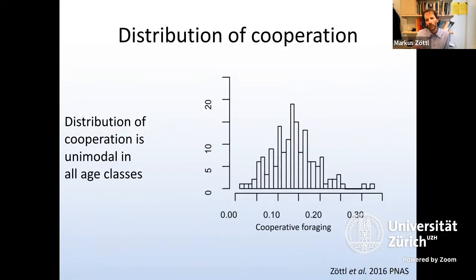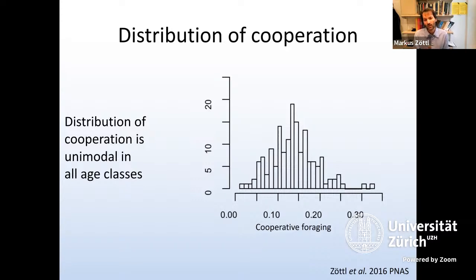When we looked at how cooperative phenotypes are distributed across the population, we found that among all age classes there is a unimodal distribution very close to a normal distribution of behavioral phenotypes. We did not find any bimodal or distinct cooperative phenotype classes.